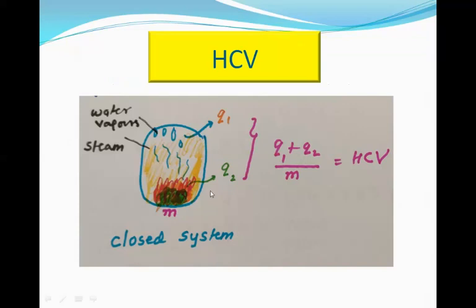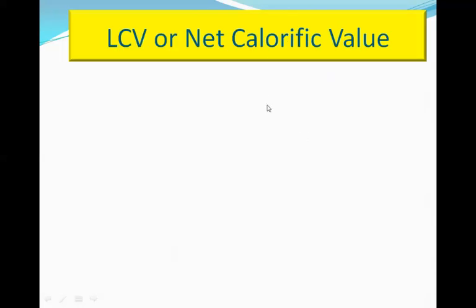As depicted in the diagram, we have a closed system heating a unit mass of substance M, which gives Q amount of heat as a result of the combustion process. At the same time, the water vapor and steam are not allowed to escape — they condense, giving out Q1 amount of heat as the latent heat of condensation. So the total amount of heat observed is (Q1 + Q2) / M, which is the HCV.